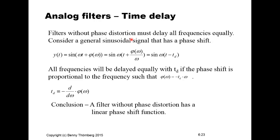Filters without phase distortion must delay all frequencies equally. Consider a general sinusoidal signal y(t) = sin(ωt + φ(ω)), where φ(ω) is a function describing the phase shift as a function of frequency ω. We can rewrite this as sin(ω(t + φ(ω)/ω)), meaning all frequencies will be delayed equally by time t_d if the phase shift is proportional to frequency such that φ(ω) = −t_d · ω.